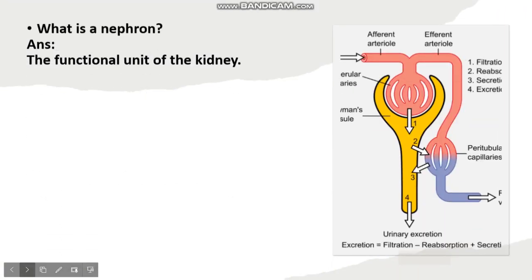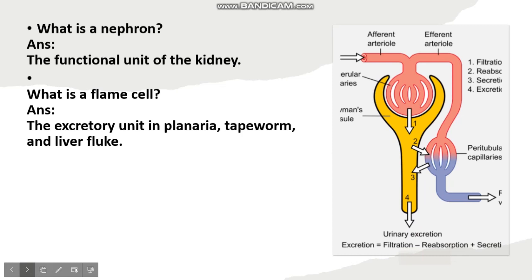What is a nephron? The answer is the functional unit of a kidney. What is a flame cell? The answer is the excretory unit in planaria, tapeworm, and liver fluke.